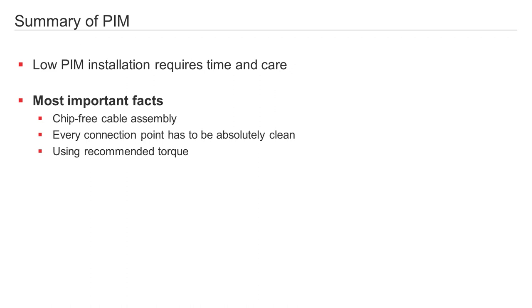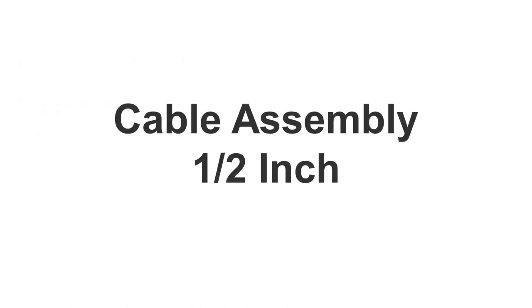What is most important is that a low PIM installation can only be achieved if cable preparation is chip-free, assembly is neat with repeated cleaning, and the correct torque is set when installing mating connectors. You will now see a video demonstrating how a low PIM installation for a half inch and seven eighths inch cable should be carried out. The values quoted in the installation instructions which must be complied with are shown in the video.